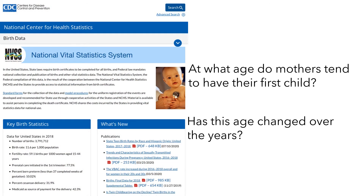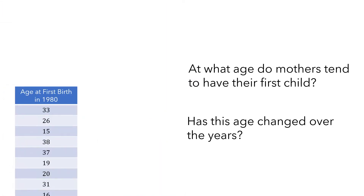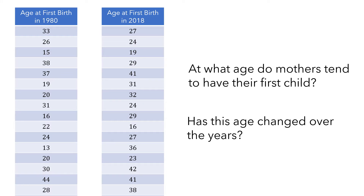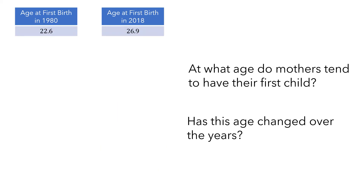The Centers for Disease Control keeps records of every birth that occurs in the United States. Here are some data about the mothers' ages when they had their first child from 1980 and also from 2018. Knowing that you have access to these data, pause the video and think about how you would answer these two questions. For many of us, our first idea is to just compute the average of these ages for each year, which seems like it would answer both research questions. But let's take a closer look at the data.